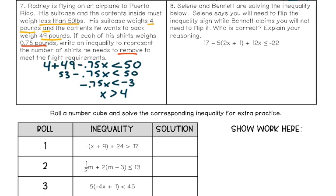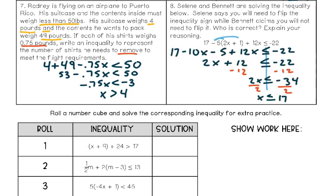Problem 8: Celine and Bennett are solving an inequality. Celine says you'll need to flip the inequality sign, while Bennett claims you will not. Work out the inequality yourself — if you have to flip the sign, Celine is correct; if not, Bennett is correct. Based on the work, Bennett is correct: the variable never has a negative coefficient, so we would never need to flip the inequality sign.